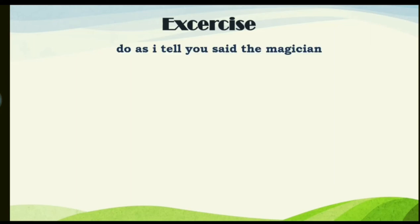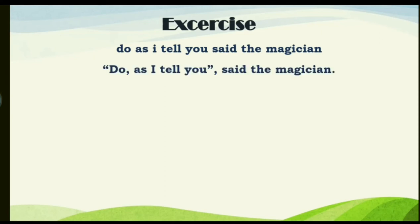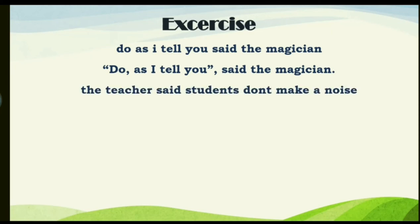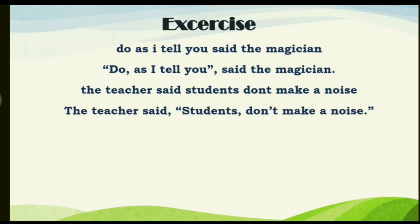Exercise time. First sentence: 'do as i tell you said the magician.' Punctuated: '"Do as I tell you," said the magician.' Second sentence: 'the teacher said students don't make a noise.' Punctuated: 'The teacher said, "Students, don't make a noise."' — with an apostrophe between n and t in 'don't,' sentence starts with capital T, and inverted commas around the spoken words.